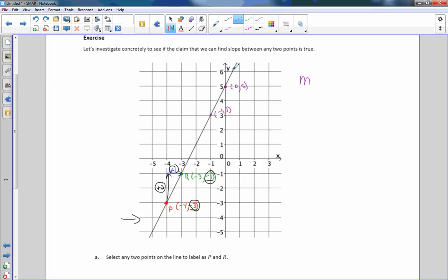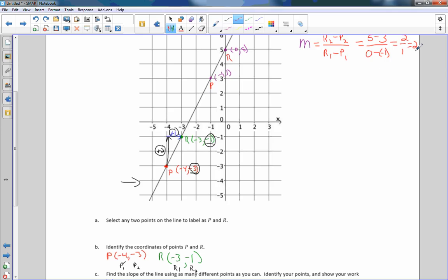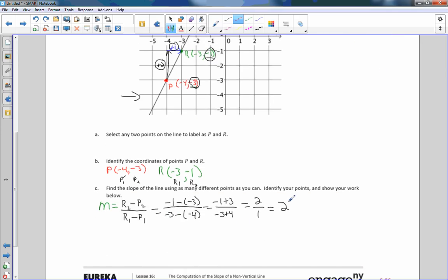So if I do my slope, and if I call this one p now and this one r, then I'm going to take r2 minus p2 over r1 minus p1. So my r2 is 5 minus p2 which is 3 divided by my r1. First position is 0 minus my first position p1 minus a negative 1. So 5 minus 3 is 2, 0 minus a negative 1 is 0 plus 1 which is 1, and as you can see, we got the same slope of 2 here as we did down here.